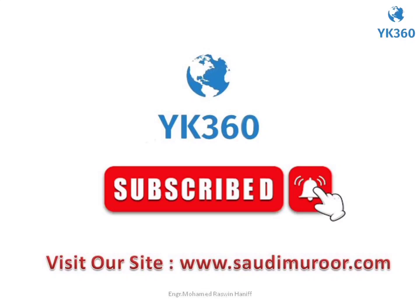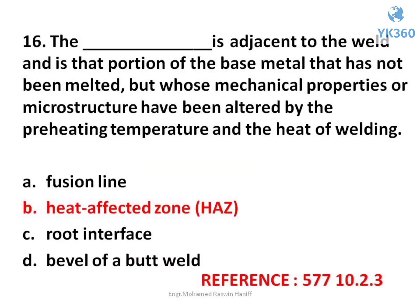Like and subscribe — it is so valuable for us. If you find this video helpful, please support us through a super thanks. One super thanks will be more helpful for us. Let us continue the questions. Question number 16. The region adjacent to the weld is that portion of the base metal that has not been melted, but whose mechanical properties or microstructure have been altered by the preheating temperature and the heat of welding — options are: A. Fusion line, B. Heat affected zone (HAZ), C. Root interface, D. Bevel of a butt weld. Answer is option B. Heat affected zone, HAZ.